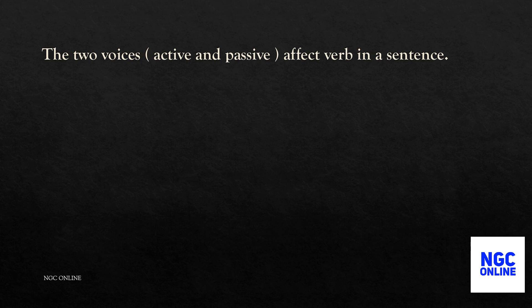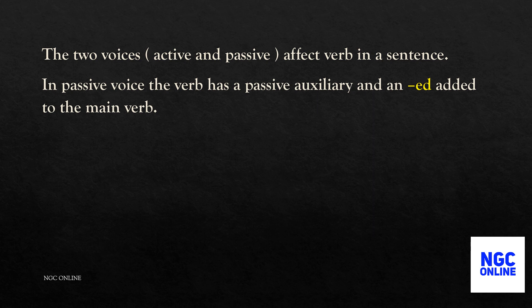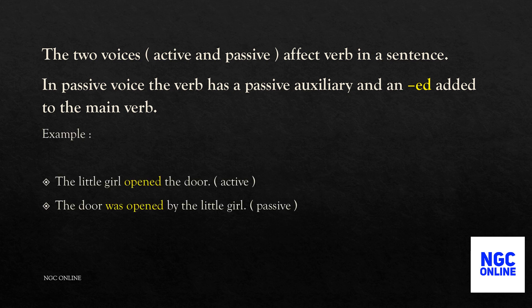The verb is changed according to the noun. The two voices — active and passive — affect the verb in a sentence. In passive voice, the verb has a passive auxiliary and an 'ed' added to the main verb. For example, 'The little girl opened the door' is in active voice. If we change the voice to passive, it becomes 'The door was opened by the little girl.' The verb 'opened' in active voice is changed to 'was opened' in passive voice.